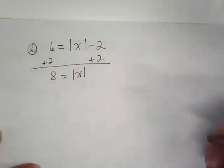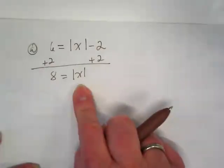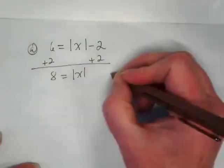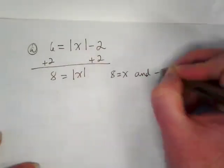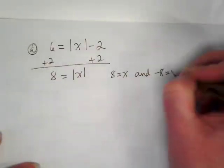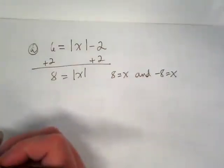What does that mean if I'm saying what X is going to be equal to? It's going to be 8 is equal to X and negative 8 is equal to X. Makes sense?